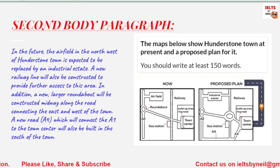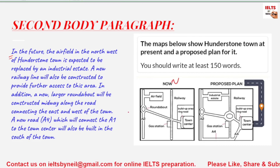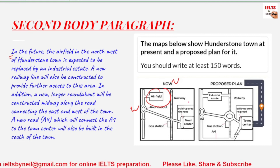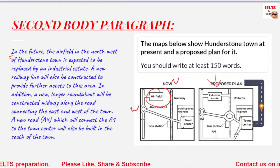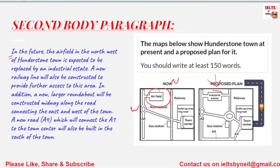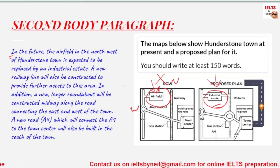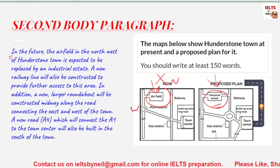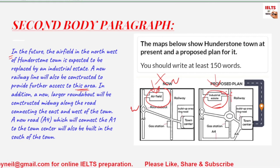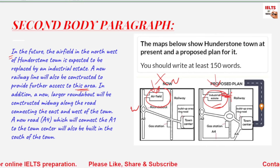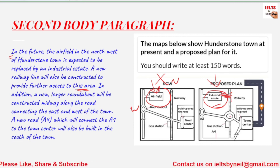Moving on to the second body paragraph. It starts: 'In the future, the airfield in the northwest of Hunderstone town' — north and west means northwest, which is this area — 'will be replaced by an industrial estate.' So the airfield will be no more in the future and will be replaced by the industrial estate. 'A new railway line will also be constructed to provide further access to this area' — meaning the industrial area — as an extension of the existing rail line. In addition, a new larger roundabout will be constructed midway along the road.